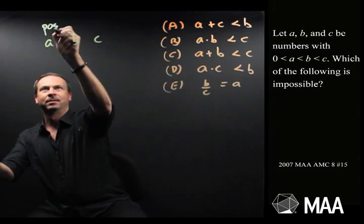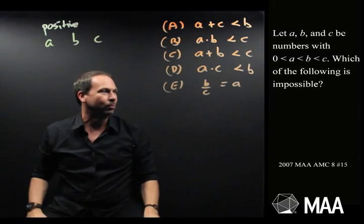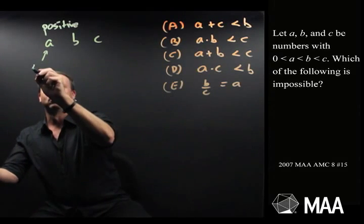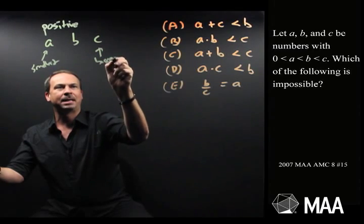They're all positive, so it doesn't hurt just to put down the information in my own version. There's my own version of they're all positive, with this one being the smallest, this one's being the biggest, and B is the middle number.